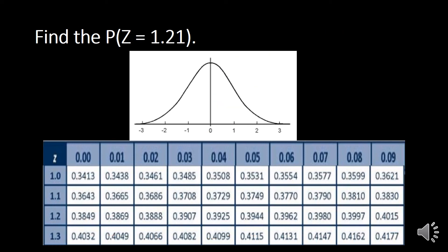One more example: the area in normal distribution is similar to probability. So 'find the probability of z equal to 1.21' means the area from the mean to z=1.21. Locating 1.2 on the column and 1 on the header of the z-table, moving down and across, gives an area of 0.3869, or 38.69 percent.